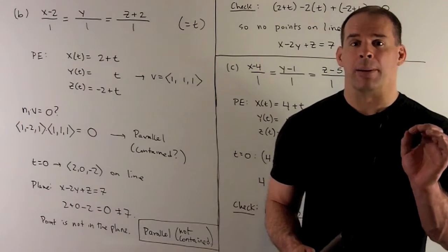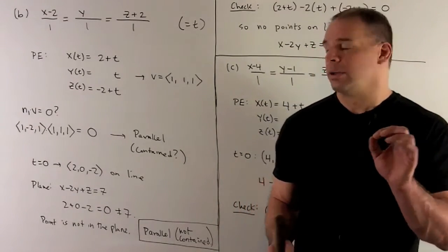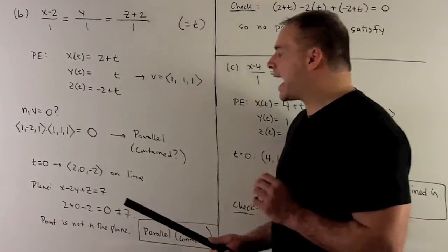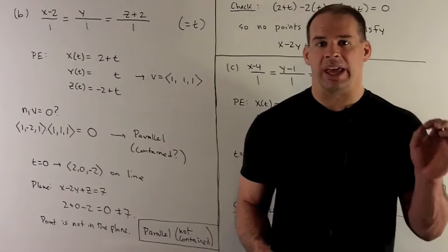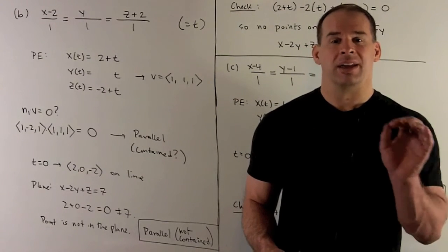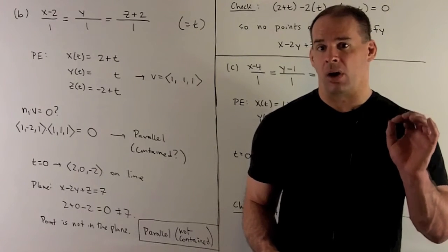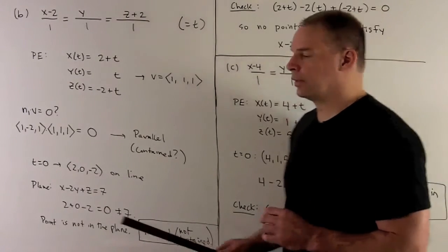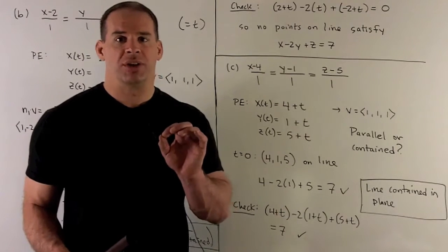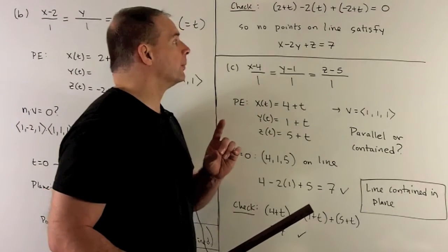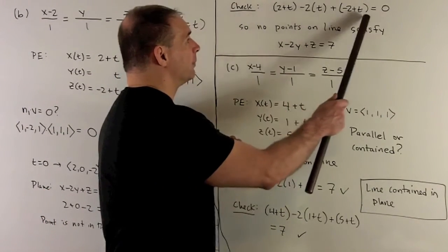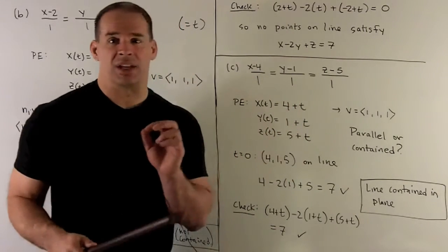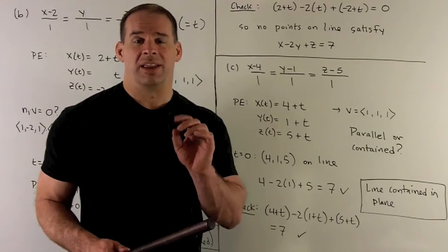The options are: either there's no intersection at all, or the line is completely contained in the plane — it's all or nothing. To see which, we just check one point on the line. Setting t equals 0 gives the point (2, 0, minus 2). Putting that into the equation of the plane gives 0, not 7, so that point is not on the plane. This means we have no intersection at all. We can also verify by substituting the parametric equations into the plane equation — we always get 0, no matter what t is, confirming no points on the line satisfy x minus 2y plus z equals 7.